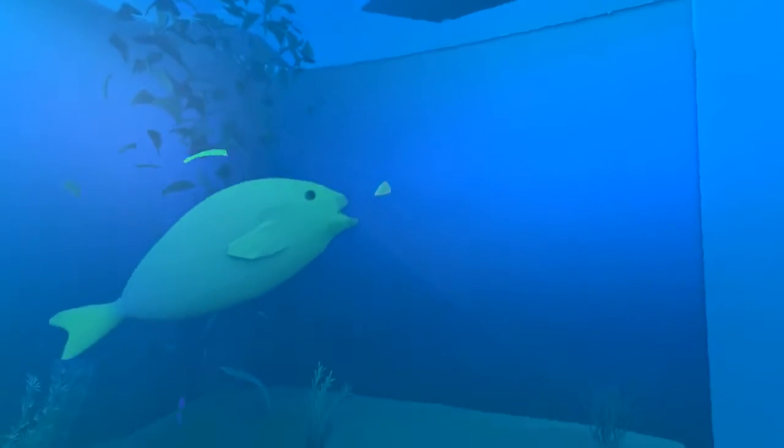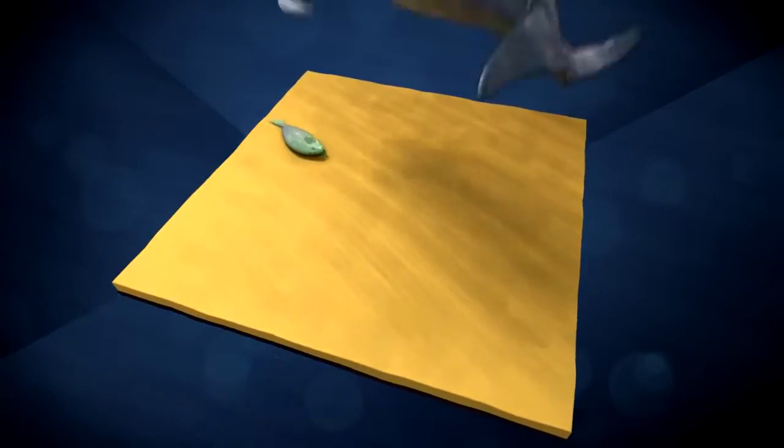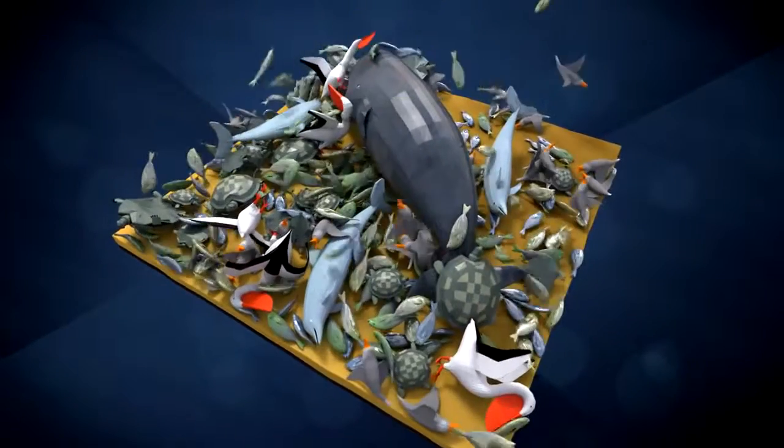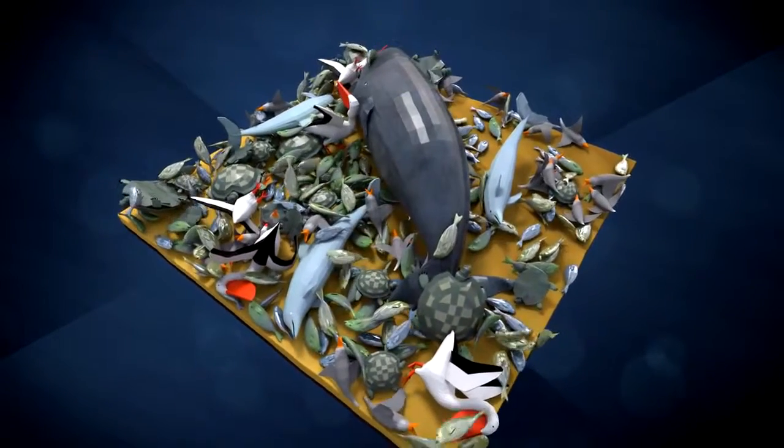Many animals mistake the plastic for plankton and eat their fill. Every year, more than 100,000 turtles, marine mammals and sea birds die a slow and painful death because they starve with a full stomach or because their intestines rupture.